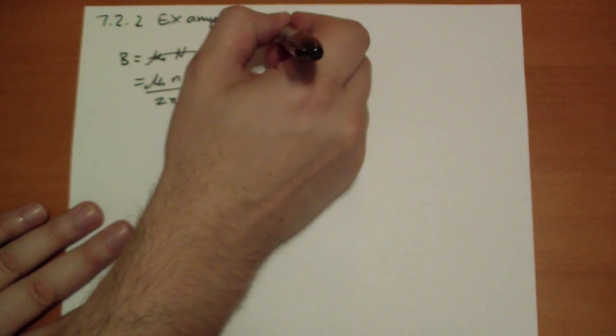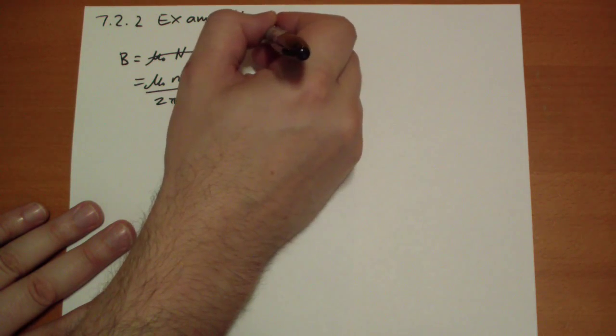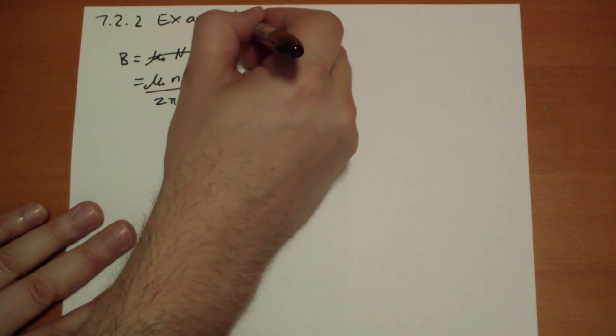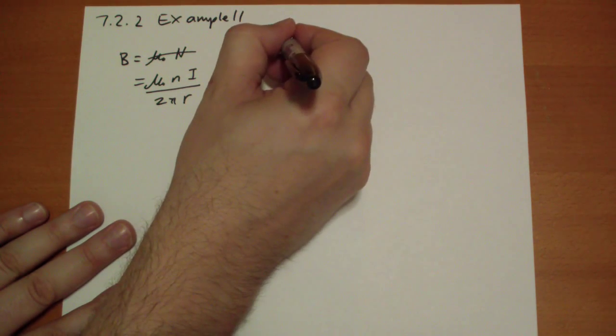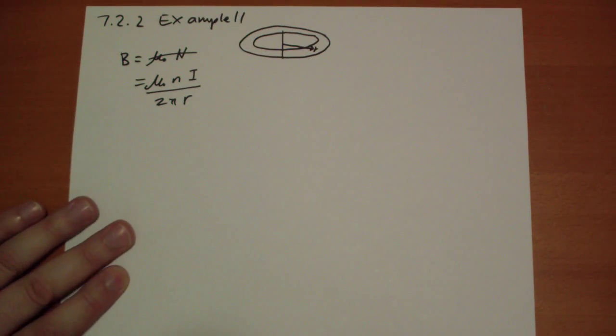Let me kind of draw a picture here. So we have the axis, we have kind of a donut shape. And r is that distance there, inside there.